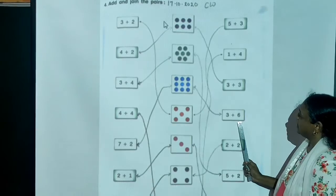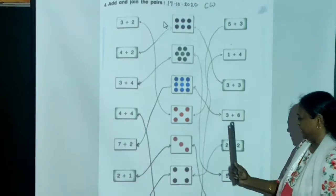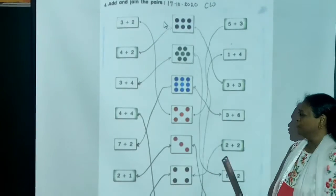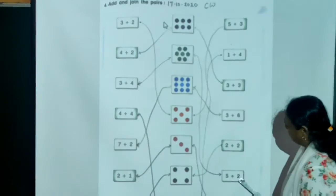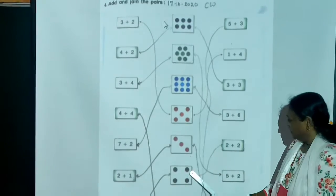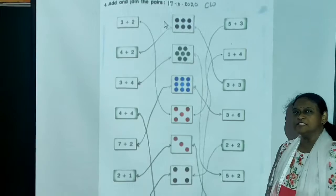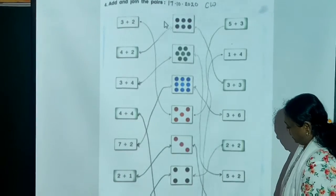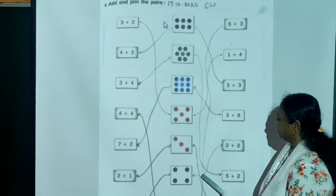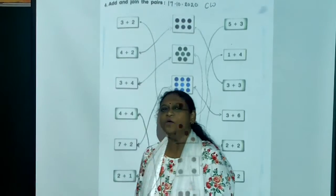3 plus 6 equals 9. So, it is 9. 2 plus 2 equals 4. Where is 4? So, here. Very good. Now, 5 plus 2. 5 plus 2 is what? 7. So you match this. 2 plus 1 equals 3. Match here.